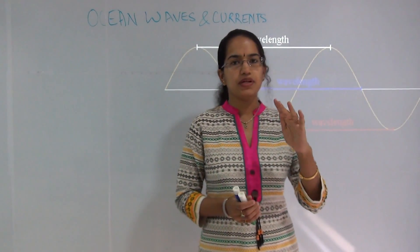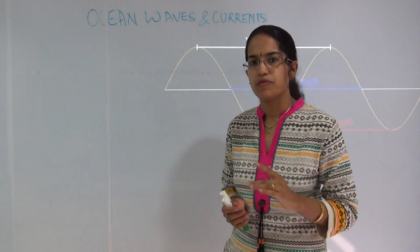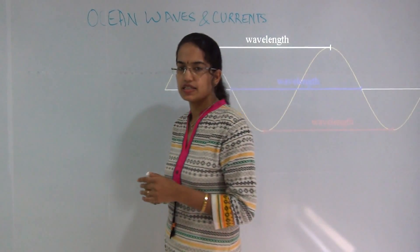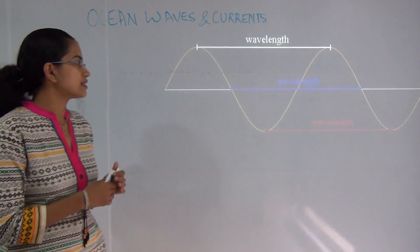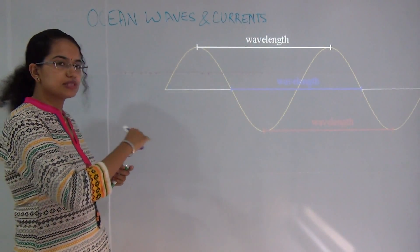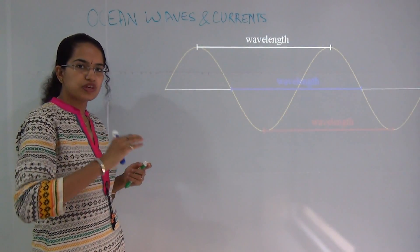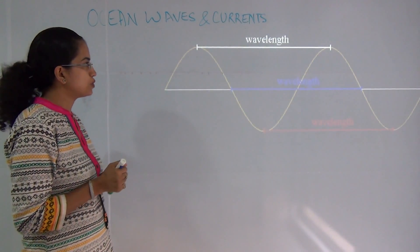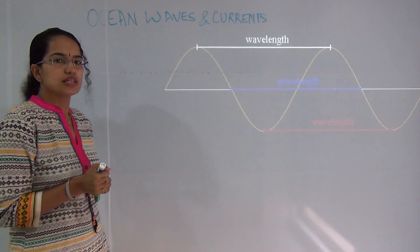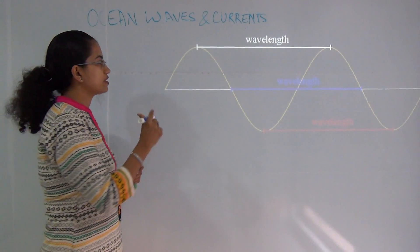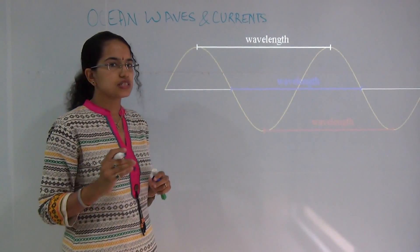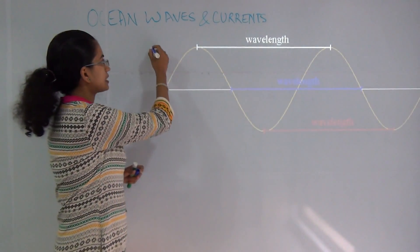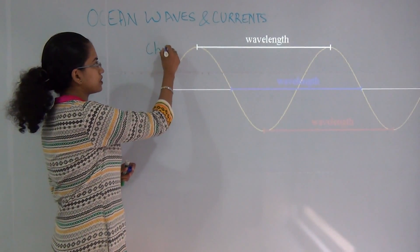Waves are ripples that are formed due to wind energy that flows, and those can be seen as waves on the oceans. Now, when we talk about waves, let's first understand the characteristics of waves.